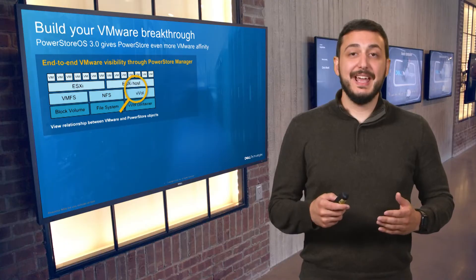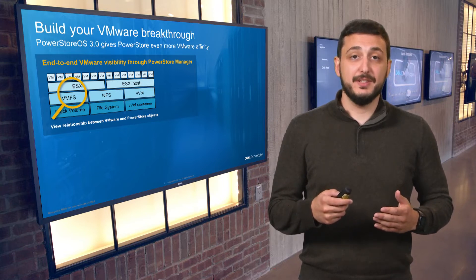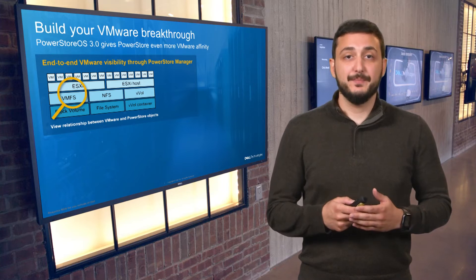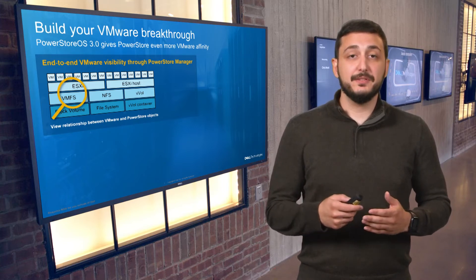We're enhancing end-to-end VMware visibility. In 3.0, we're letting users see the relationship between all kinds of VMware and PowerStore objects within PowerStore Manager. In previous releases, we started with VMs and VMware host awareness. Now we're showing associations between data stores and backend storage, including block volumes, storage containers, and NFS file systems.